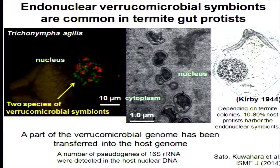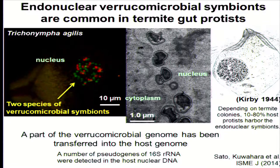The same Trichonympha protist cells also have an endonuclear symbiont. We identified the symbiont as one species of Verrucomicrobial lineages. FISH imaging indicated that at least two species of Verrucomicrobial symbionts are inhabiting these protist cells.